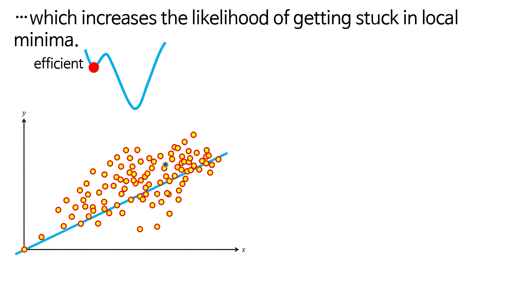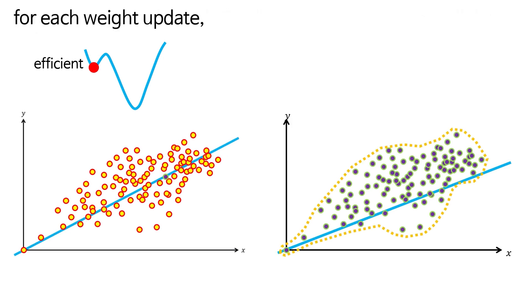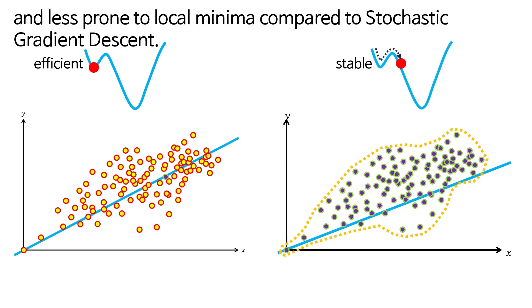On the other hand, batch gradient descent considers all data points for each weight update, making it more stable and less prone to local minima compared to stochastic gradient descent.